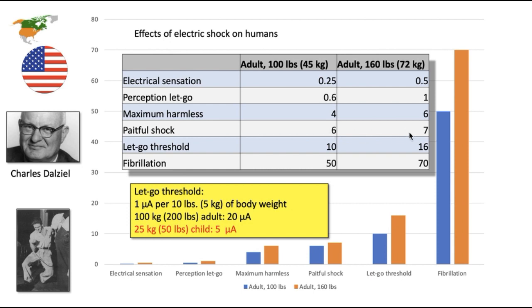Going further down the line, 6 and 7 milliamps respectively would result in a painful shock. Let go threshold was 10 and 16 milliamps respectively. That's a very important threshold.